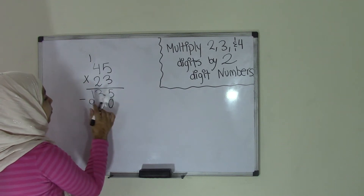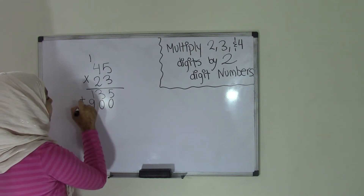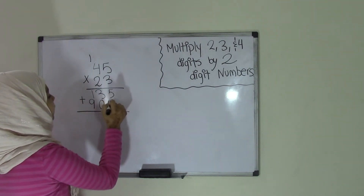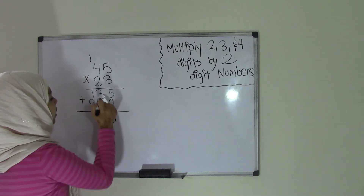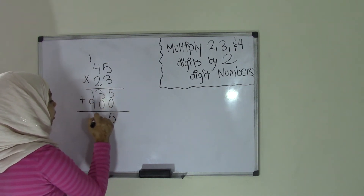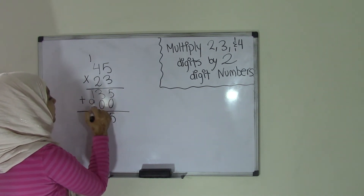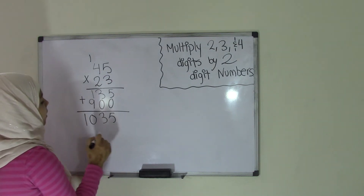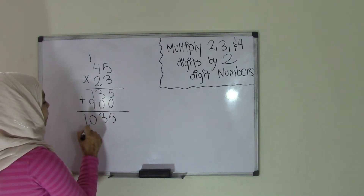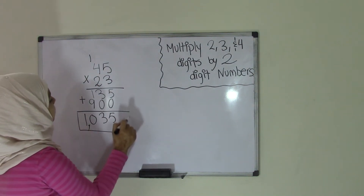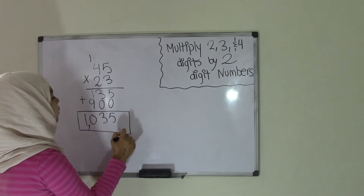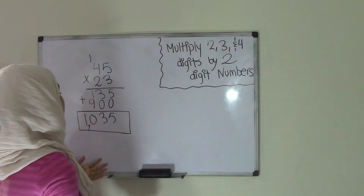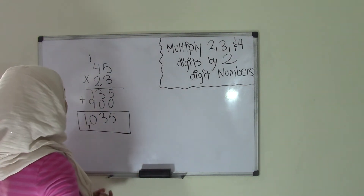Now I have both of these products, so I'm going to add them together. 5 plus 0 is 5. 3 plus 0 is 3. And 1 plus 9 is 10. So I get my product of 1,035. That means 45 times 23 equals 1,035. So that was really easy, right?